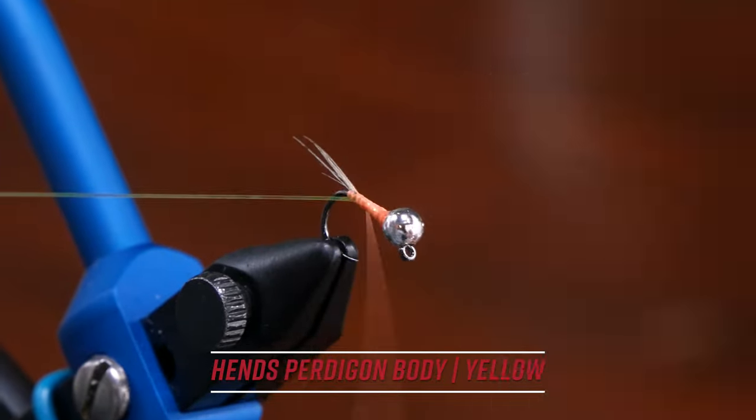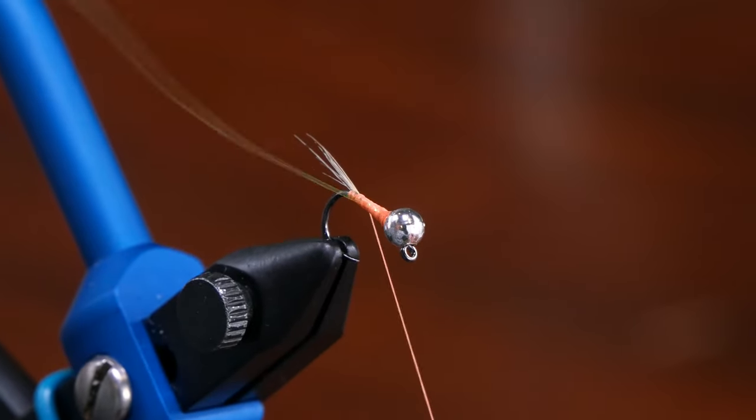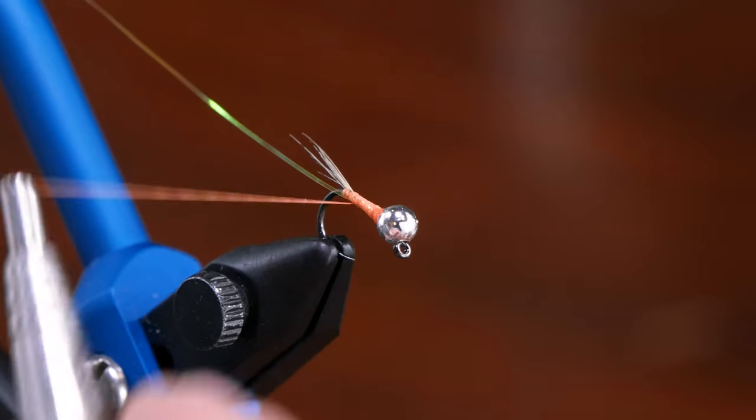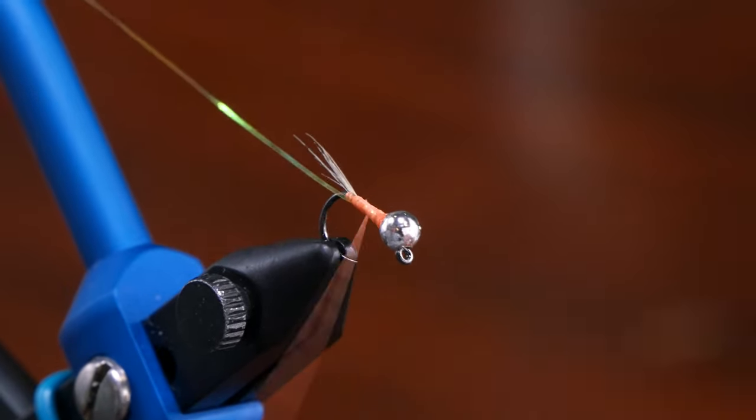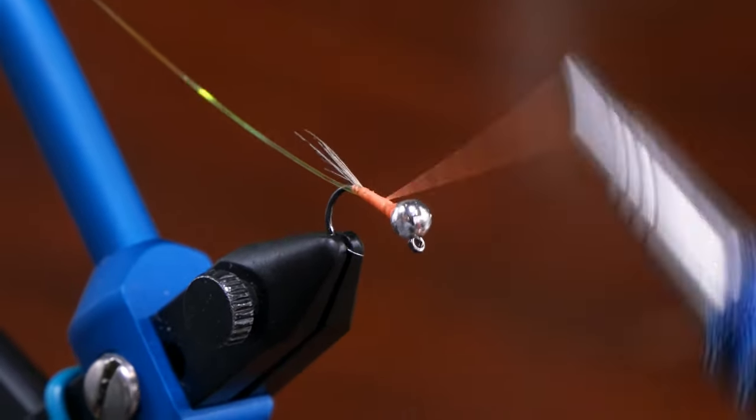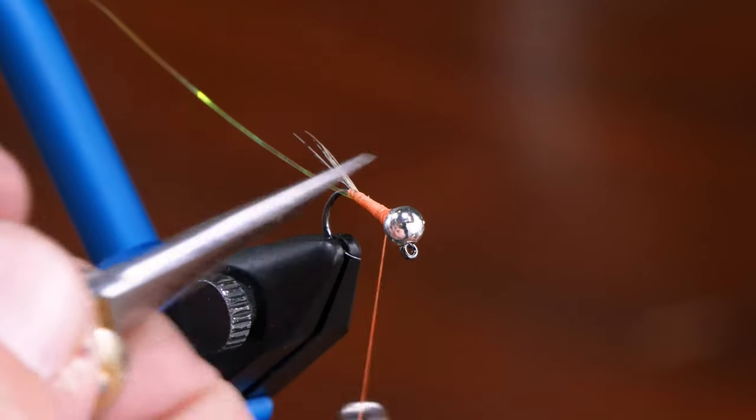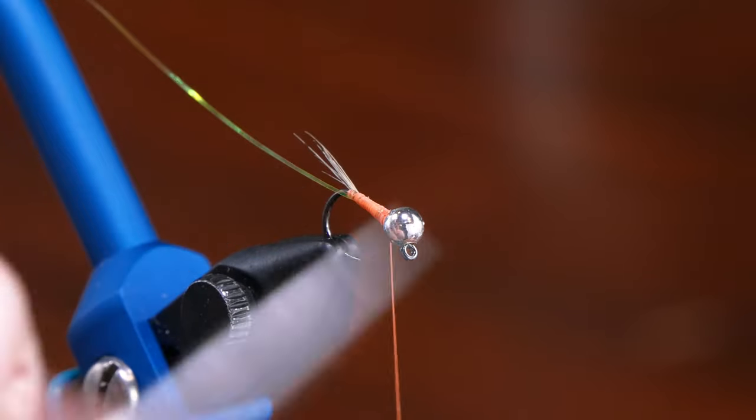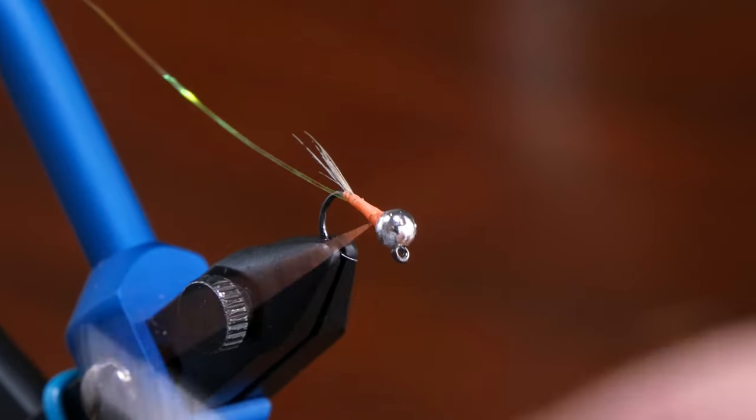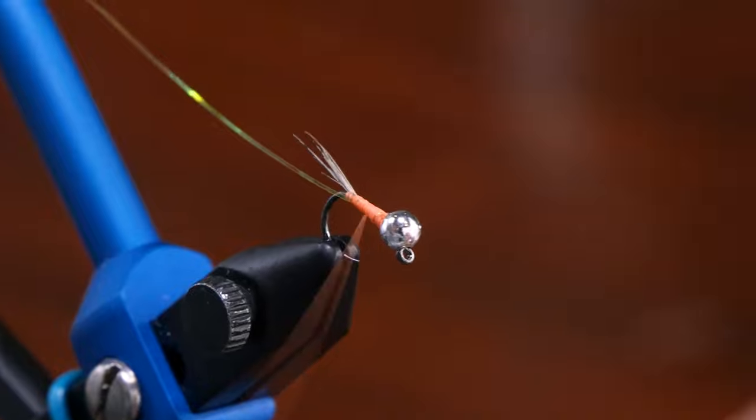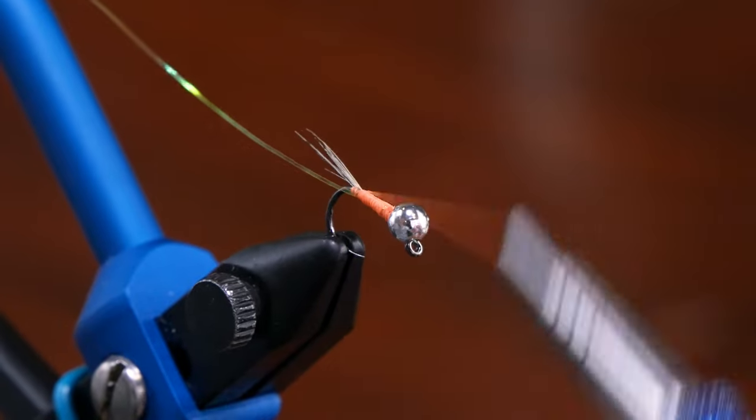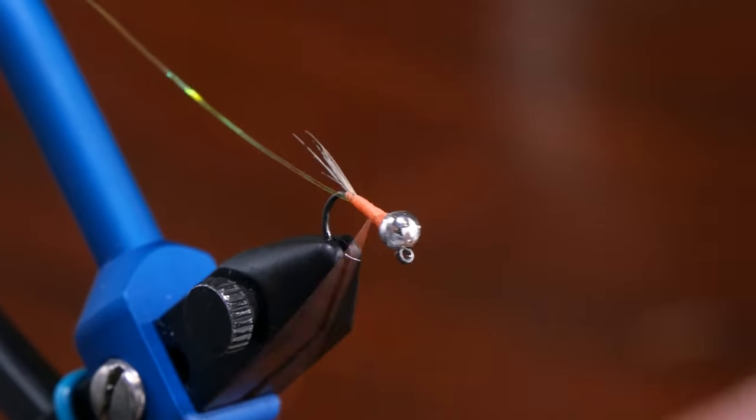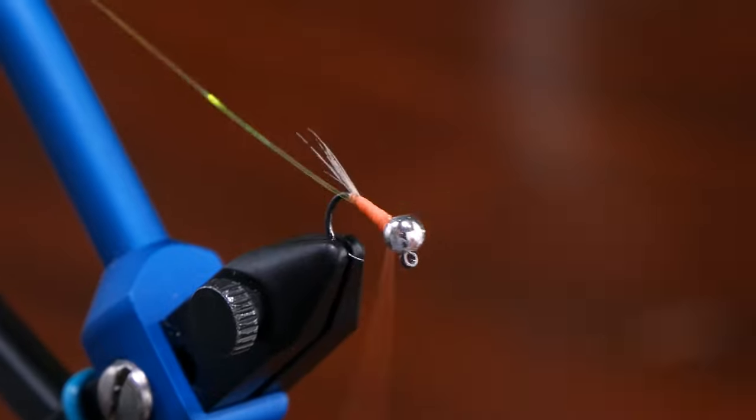I'm going to go back right in front of the tail, get my flash out of the way. I really want to make sure I'm using minimal wraps and keeping things clean. I don't need to go all the way up to the front because we're going to fill this up at the end with our hot spot. I want to make sure I stop just shy and taper back down. Not looking for bulk, just a good solid base of color so the underbody shows through with the flash.